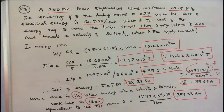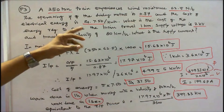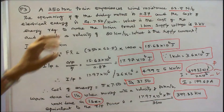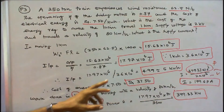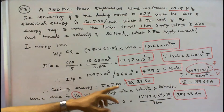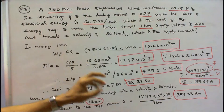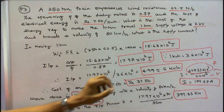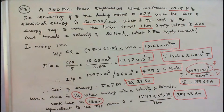Next we find the cost of energy. Per unit cost is given as Rs. 7.50. So 5 into 7.5 is equal to Rs. 37.50. That is the cost of energy.